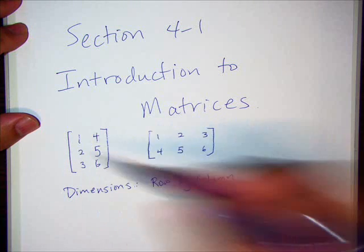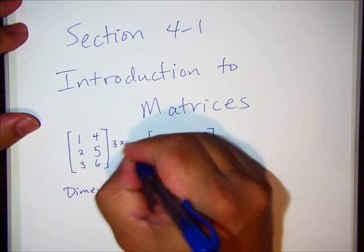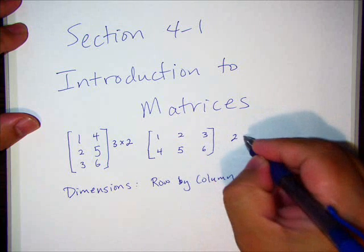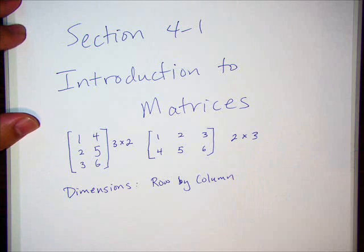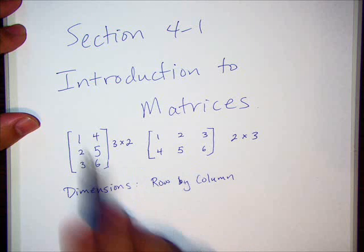So the first matrix I have drawn here is a 3 by 2, and the second one is a 2 by 3. I already mentioned some other words: rows going this way, columns going this way.